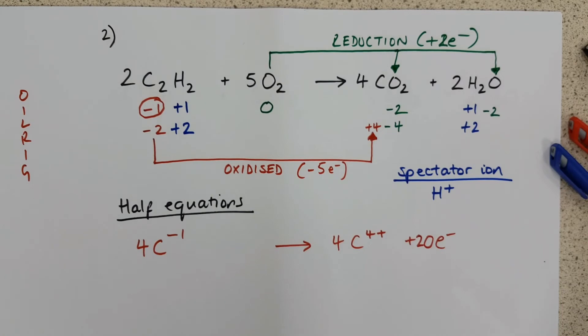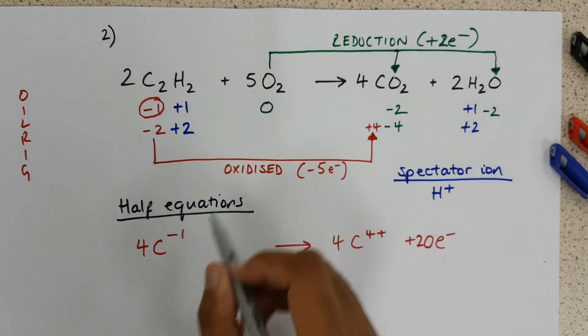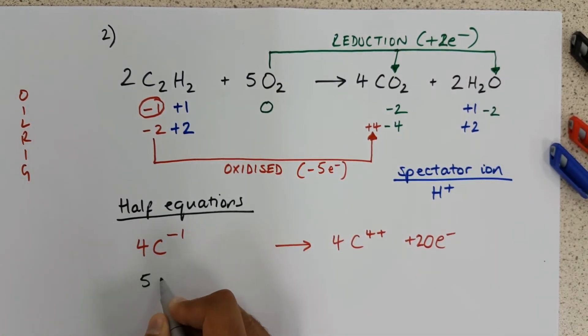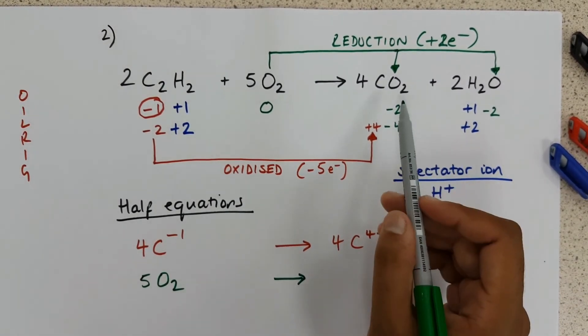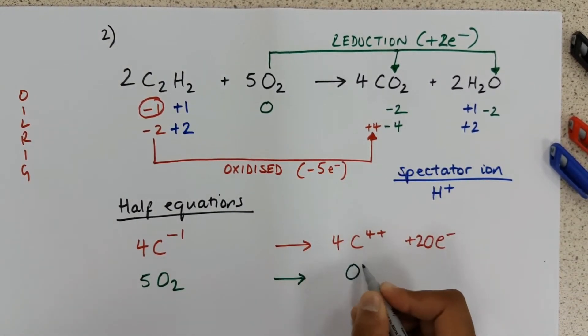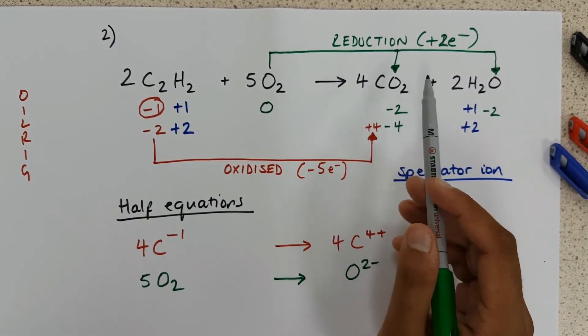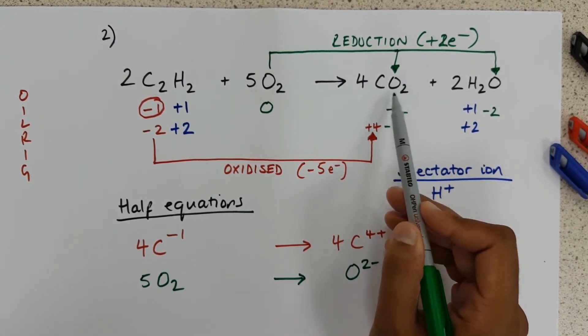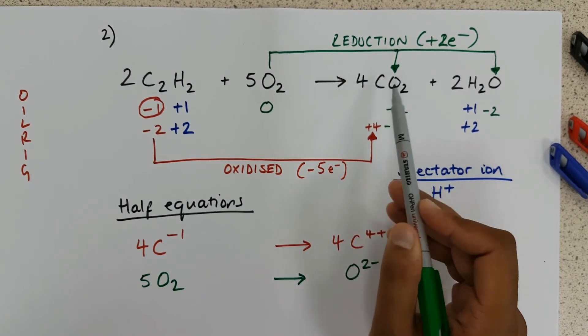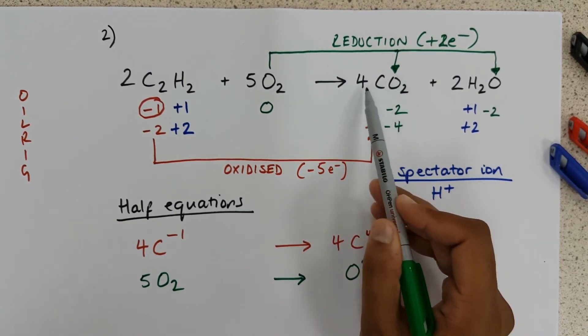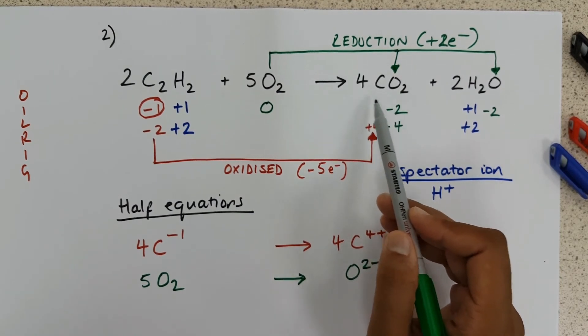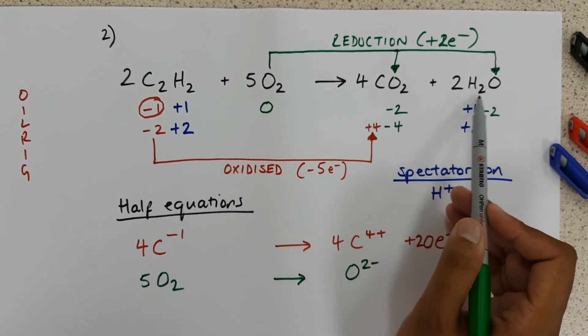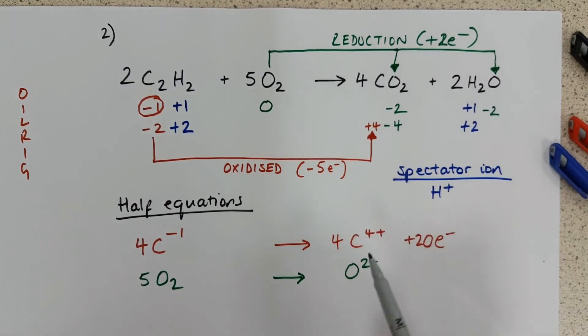If we look at the oxygen, we start with five O2s. And we end up making oxygen two minus ions on this side. And if we calculate how many we have, there are two oxygens in a carbon dioxide molecule. We have four molecules, therefore there are eight oxygen ions. But we must also add on the two extra from here. All in all...